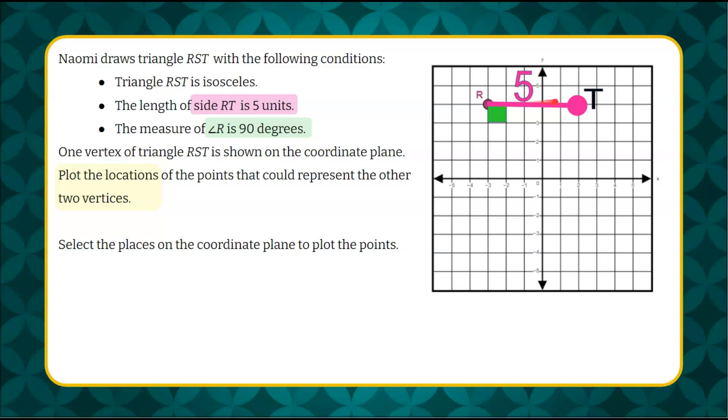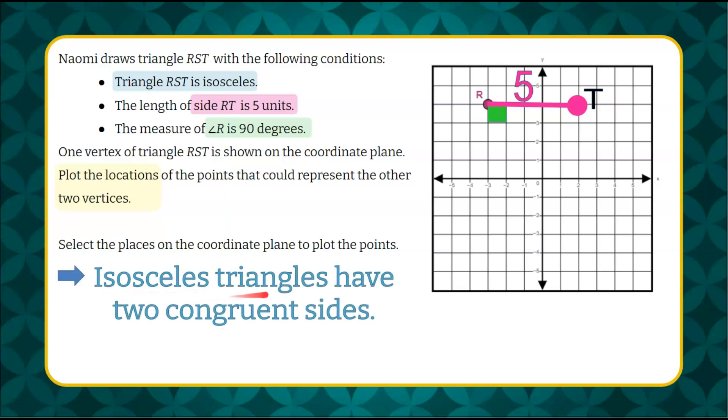That's going to make side or segment RT of my isosceles triangle. Now I understand that our triangle is an isosceles triangle. By definition, an isosceles triangle has two congruent sides.